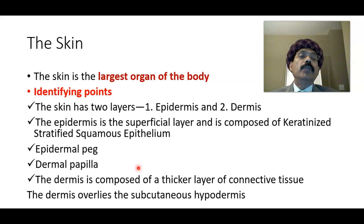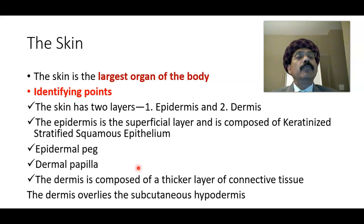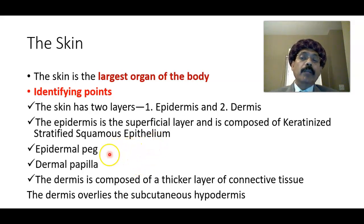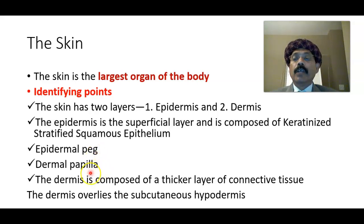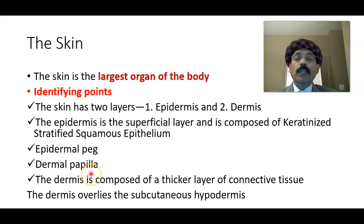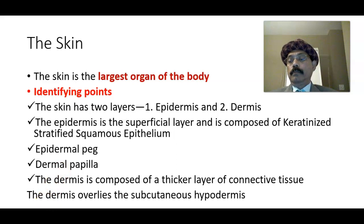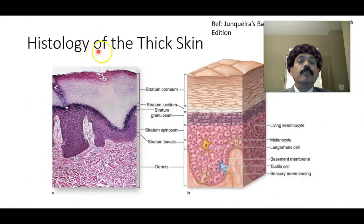The skin has two layers: the epidermis, which is the superficial layer, and the deep layer is the dermis. The epidermis is composed of stratified squamous epithelium and the dermis is a thicker layer of connective tissue. We will also see epidermal pegs and dermal papillae. The epidermal peg is the prolongation of the epidermis into the dermis, and the protrusion of the dermis above is the dermal papilla. The epidermis is an ectodermal derivative and the dermis is a mesodermal derivative.